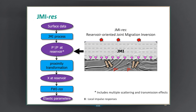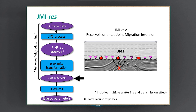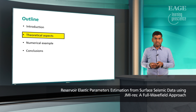When we have the up- and down-going wave fields at the reservoir, we apply multidimensional deconvolution to get reservoir impulse responses, or local impulse responses. We call this process proximity transformation. This whole process is what we call full wave field redatuming, because we account for all orders of scattering. After obtaining these local impulse responses, we apply a localized target-oriented full waveform inversion to estimate elastic parameters. This is what JMI-RIS is in a nutshell.